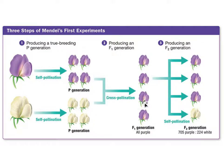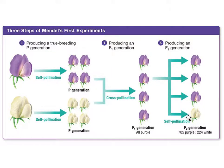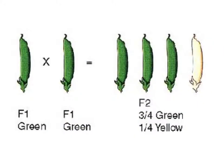Mendel then allowed the F1 generation to self-pollinate, creating the F2 generation — kind of like the grandchildren. What Mendel noticed was that all of a sudden the white flowers showed up again. The F1 generation had no white flowers, but in the F2 generation there was a ratio of three to one — three purple flowers to one white flower. He did other experiments as well, looking at pod color, and found the same ratio: three green to one yellow.